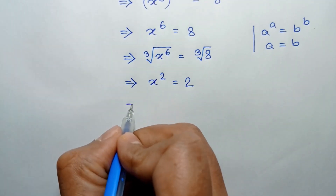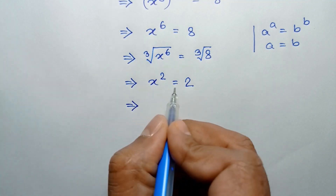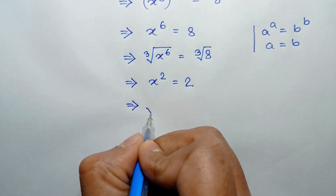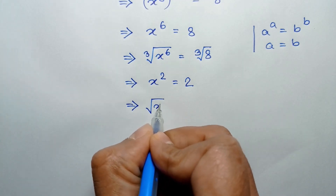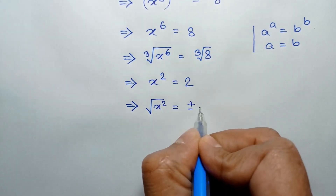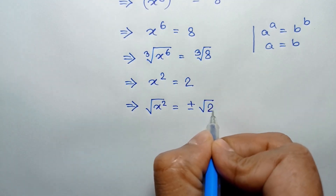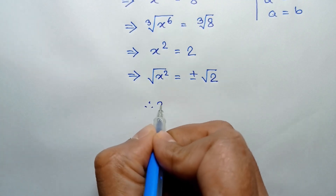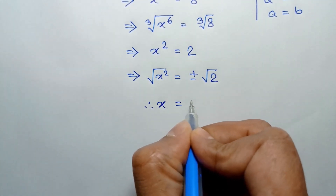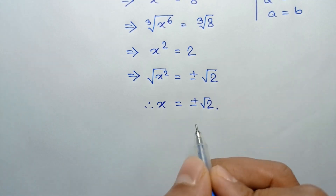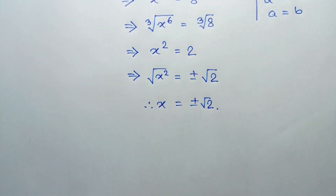Taking the square root of both sides, square root of x squared is x, equal to plus or minus square root of 2. So x is equal to plus or minus square root of 2. These are the two real solutions of this equation.